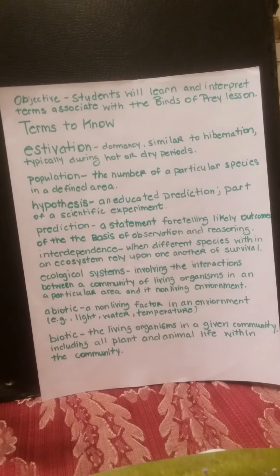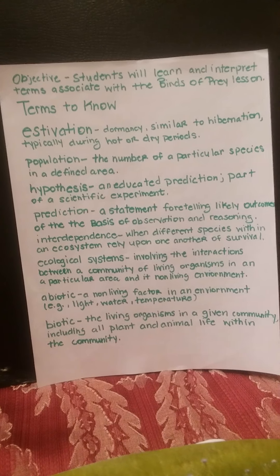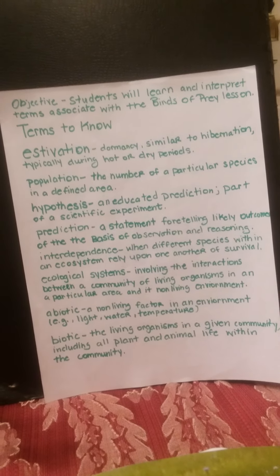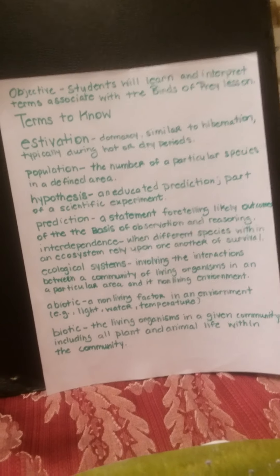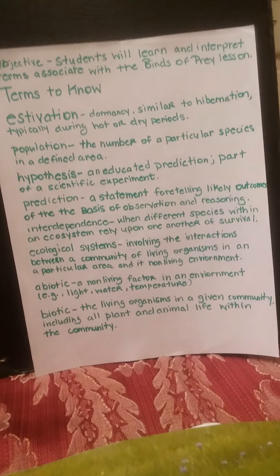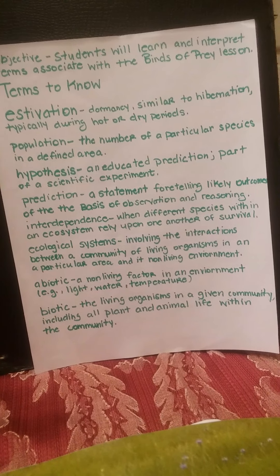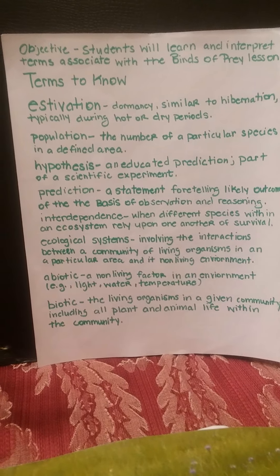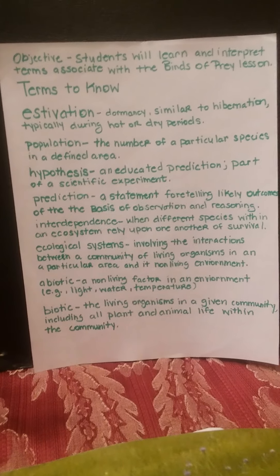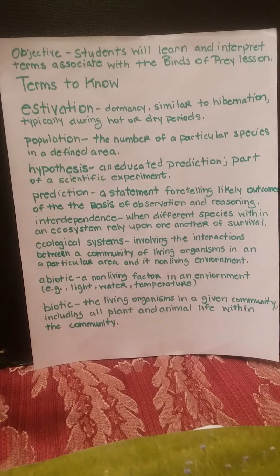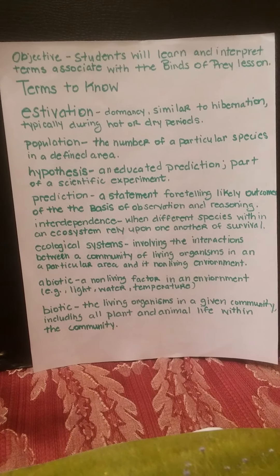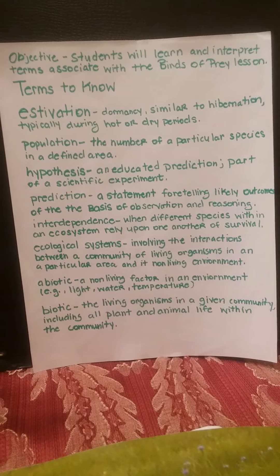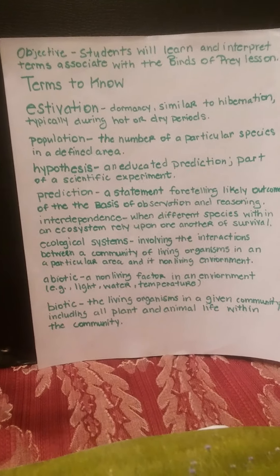which means the area would become a lot drier in the summertime, so conditions would probably be very different than they are now. Interdependence is when different species within an ecosystem rely upon one another for survival. This was quite obvious in our lesson — we learned that Piute ground squirrels are the main source of food for the peregrine falcons, and the peregrine falcons had to move to another area once the Piute ground squirrels went into their summer estivation.